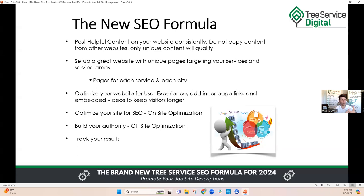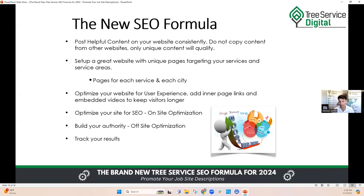Set up a great website with unique pages targeting your services and your service areas. Your services — tree trimming, tree pruning, tree removal, land clearing, forestry mulching, stump grinding, tree healthcare, tree fertilization — list each on an individual page with unique content. Also list all your service areas. If you service seven cities in a 20-mile radius, create a city page for each one because that page will be focused on that city's tree service, tree removal, and forestry keywords. Your homepage will generally only show in your main market, but individual city pages will help you rank in all the surrounding areas you service.